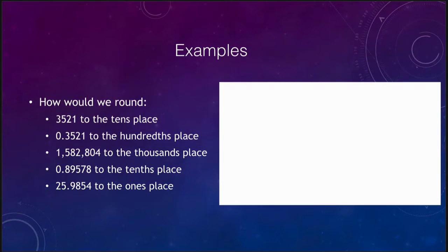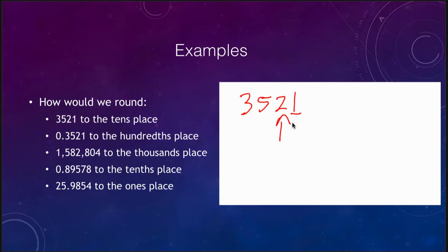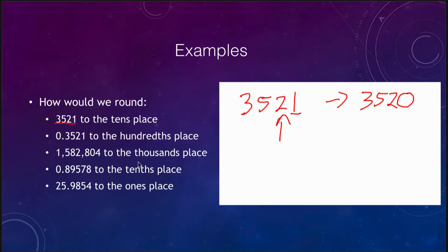Let's look at a few examples. Our first example: we want to round 3,521 to the tens place. The two is our rounding digit; the number to the right of that is a one. Since that is in the small range, we just drop it. But we need to put a zero in as a placeholder because the numbers are to the left of the decimal place. So rounding 3,521 to the tens place gives us 3,520.